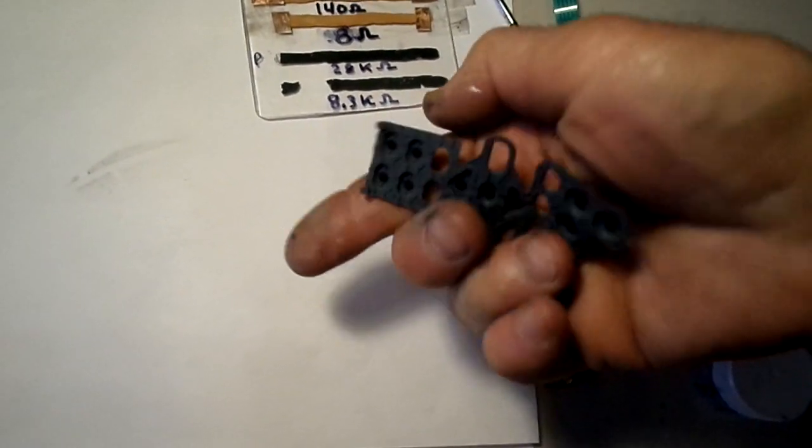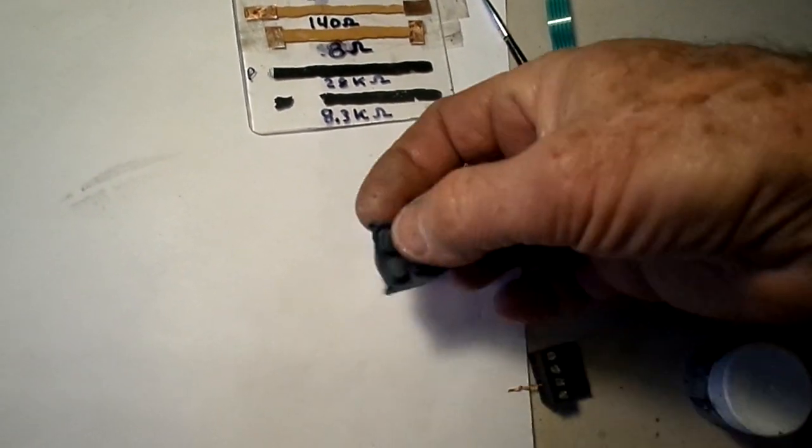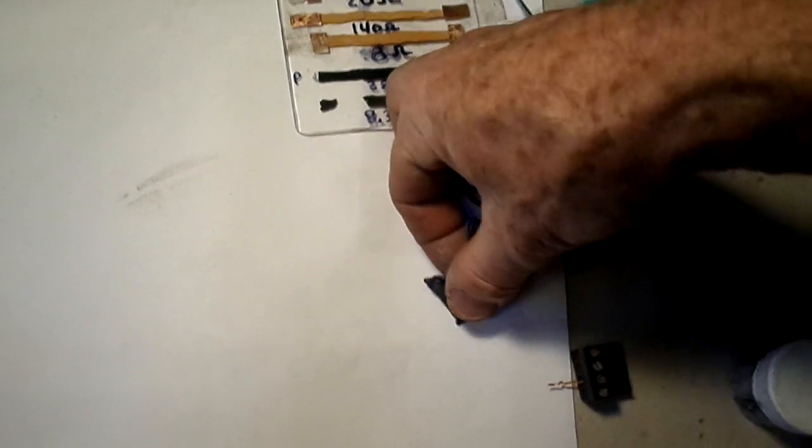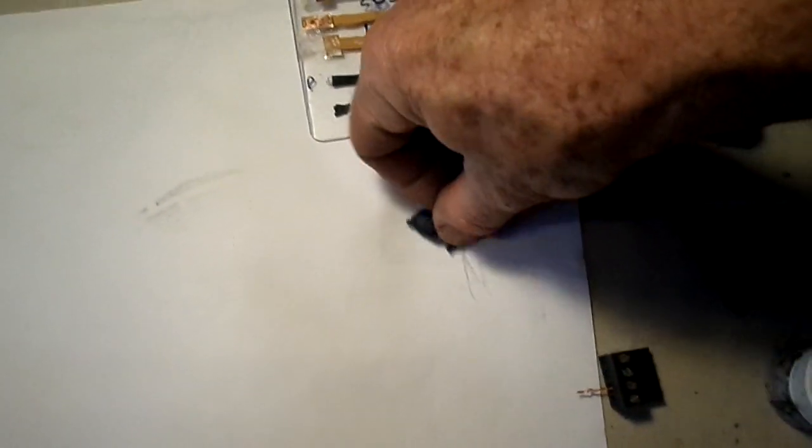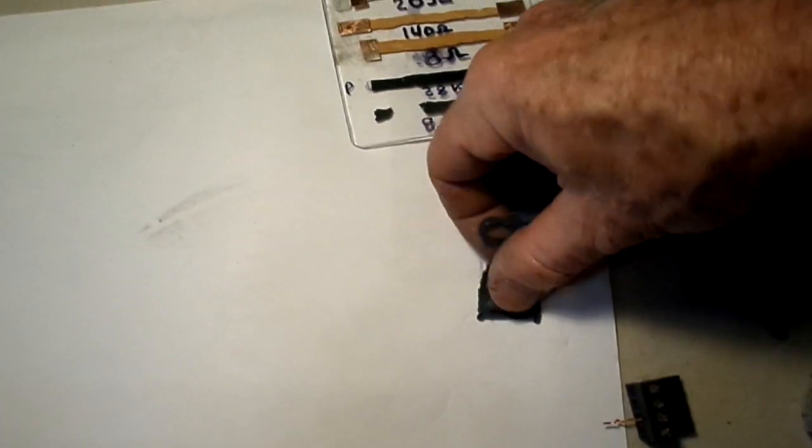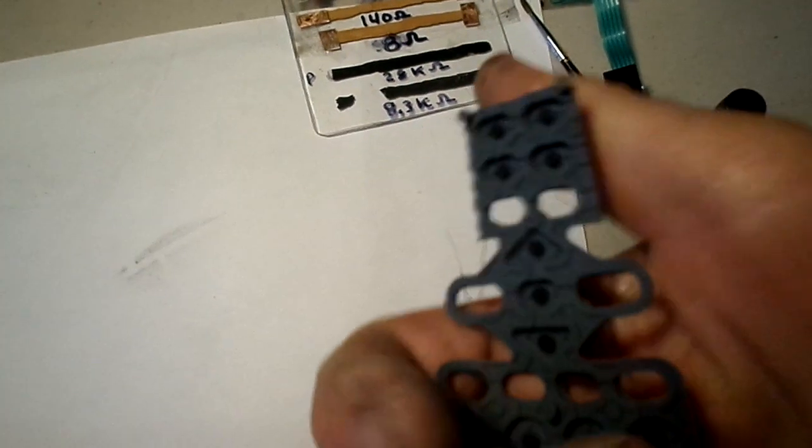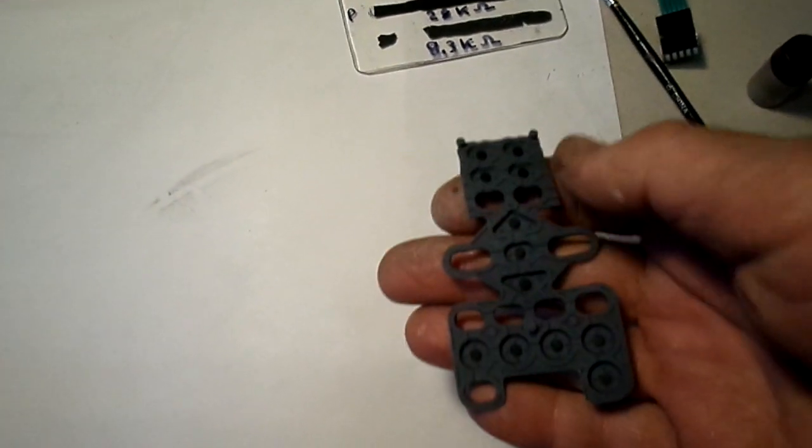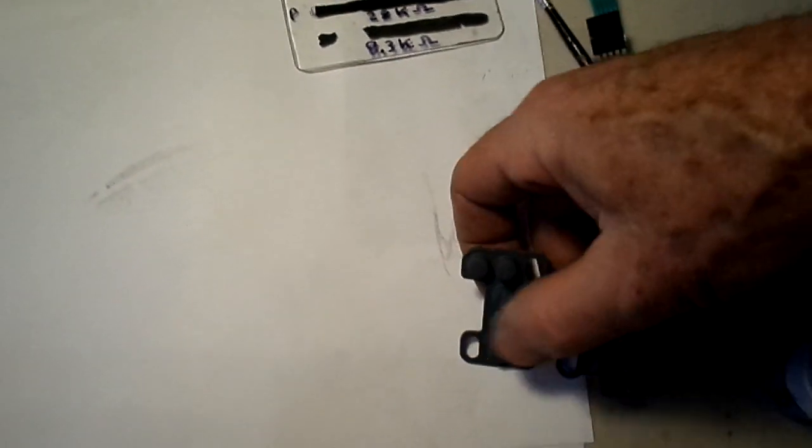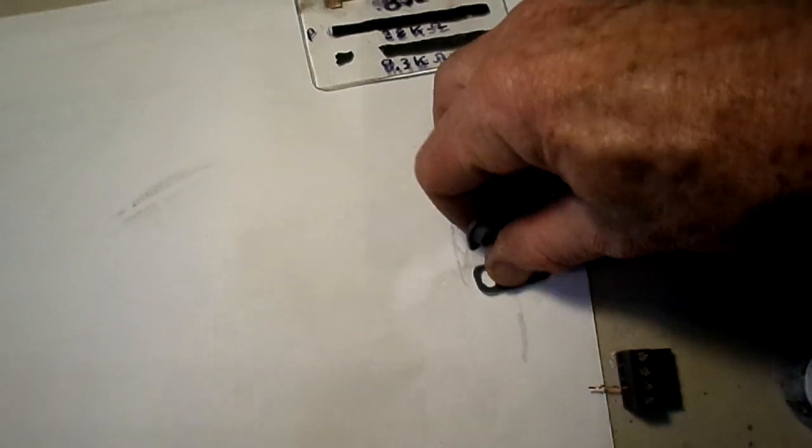There are situations where sometimes these pads will go bad. A lot of times you can fix them just by pushing down on a piece of paper and dragging them across like this. You can see it leaves a little bit of a mark there on the paper. Thanks to one of my viewers that pointed this out to me a long time ago. A lot of times you can restore these just by doing this.